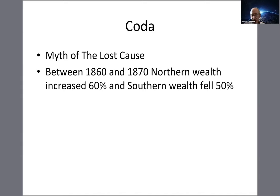One way Southerners coped was the myth of the Lost Cause — the idea that the war wasn't about slavery but about chivalry and a genteel way of life, fighting against the crass Northerners. Influenced by novels like those of Walter Scott, they romanticized their cause. But of course it was about slavery. You're free to believe whatever you like, but that's the historical reality.